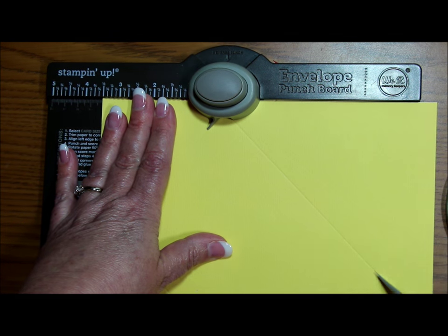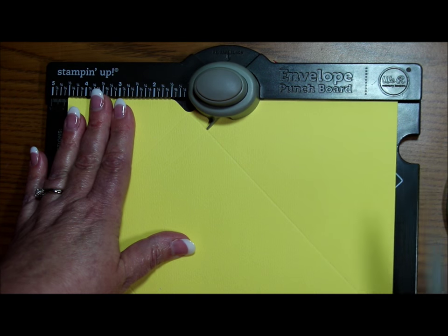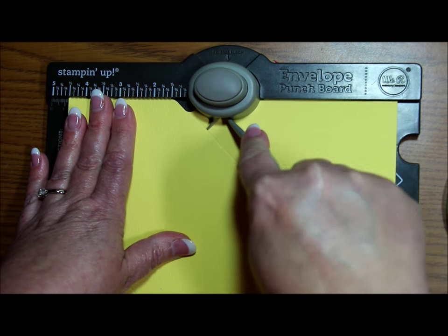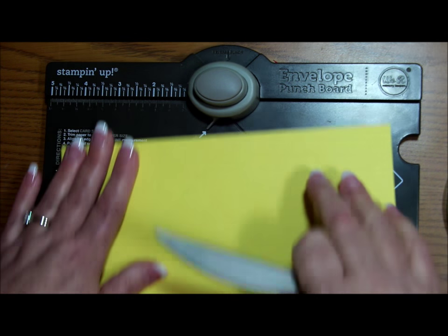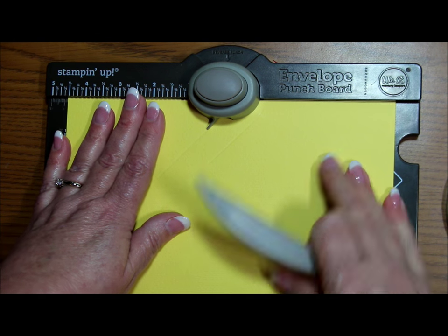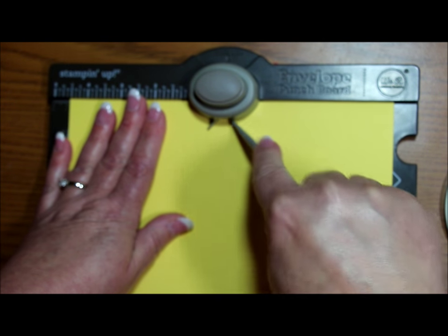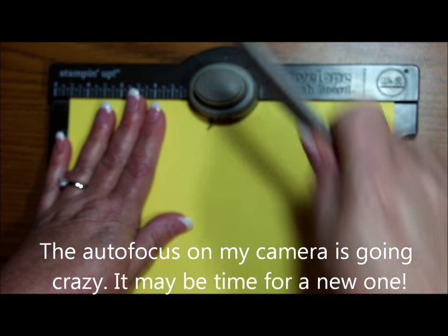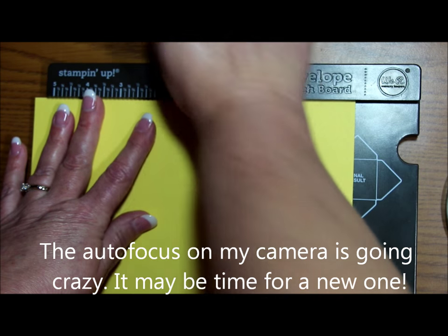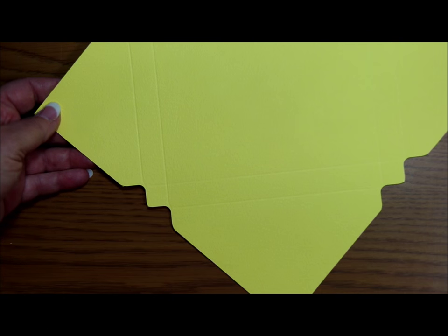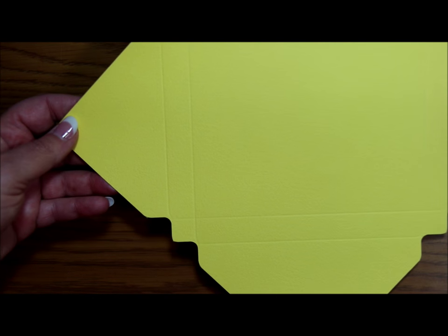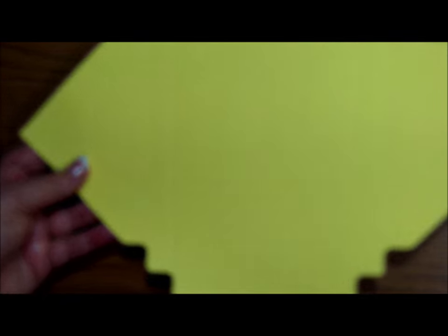And I'm going to punch and score, got out of my little track there. And punch and score, and punch, having a little hard time staying in my track. And punch and score. So I have my cardstock here, which has been punched and scored on all four sides.